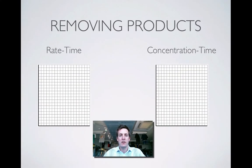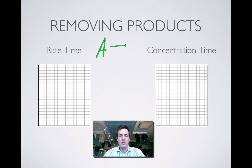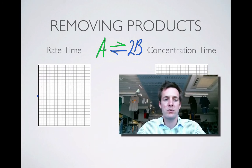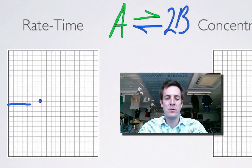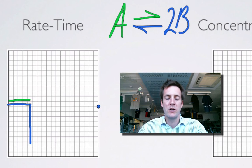Last one: removing products. Again, let's have a two-to-one reaction — A turning into 2B, and 2B turning back into A. The backward reaction in blue, the forward reaction in green, same rate because they are at equilibrium. Suddenly removing some products means the backward reaction will decrease in rate.